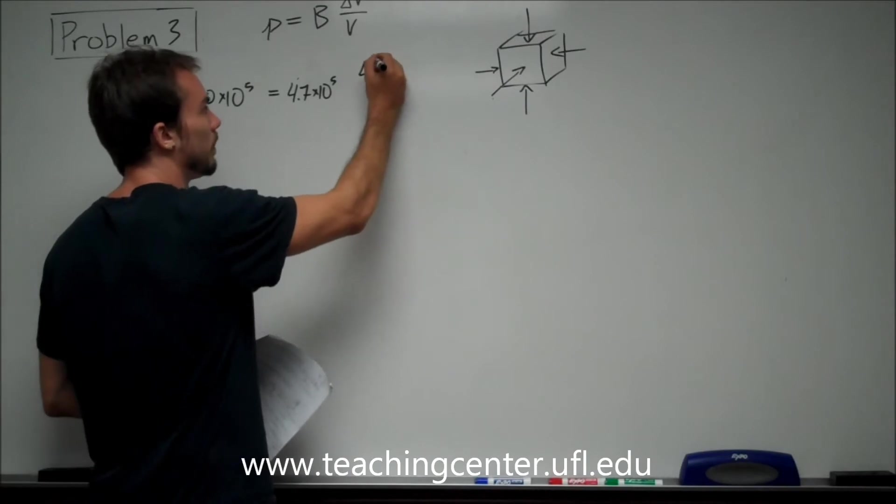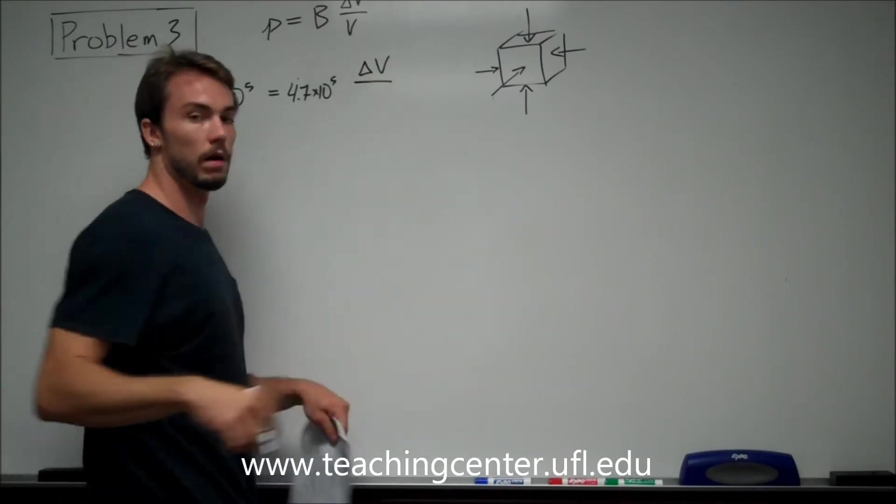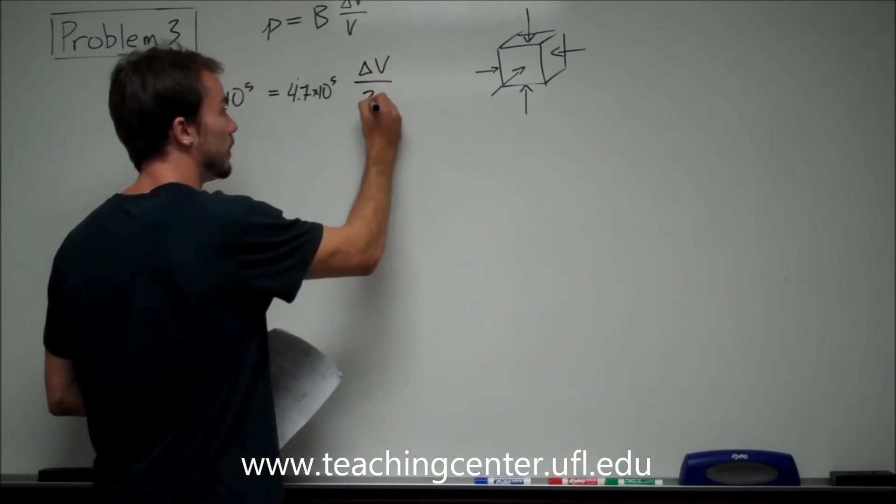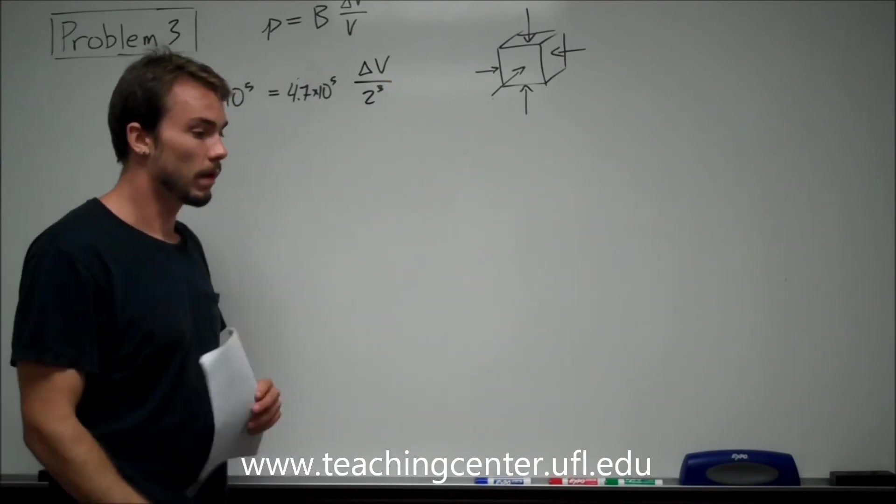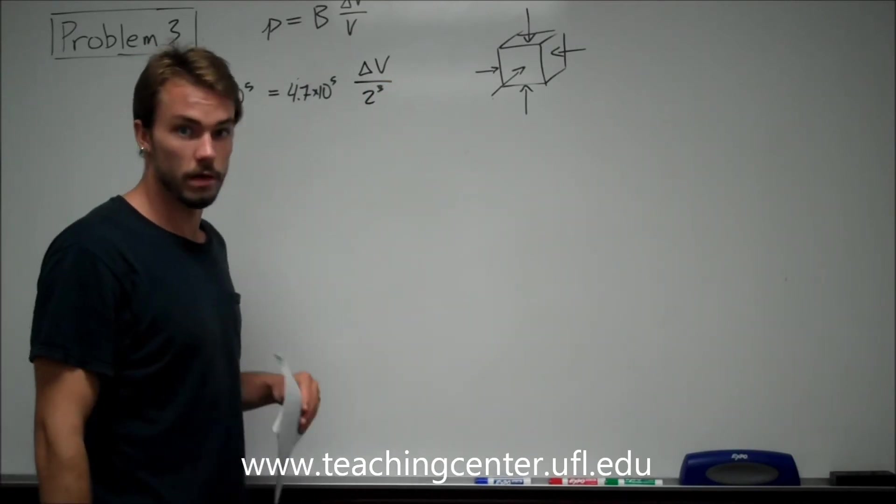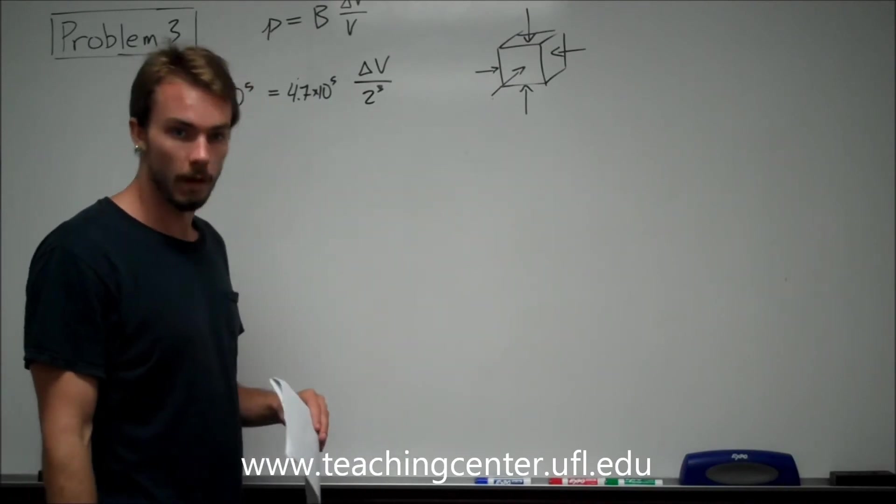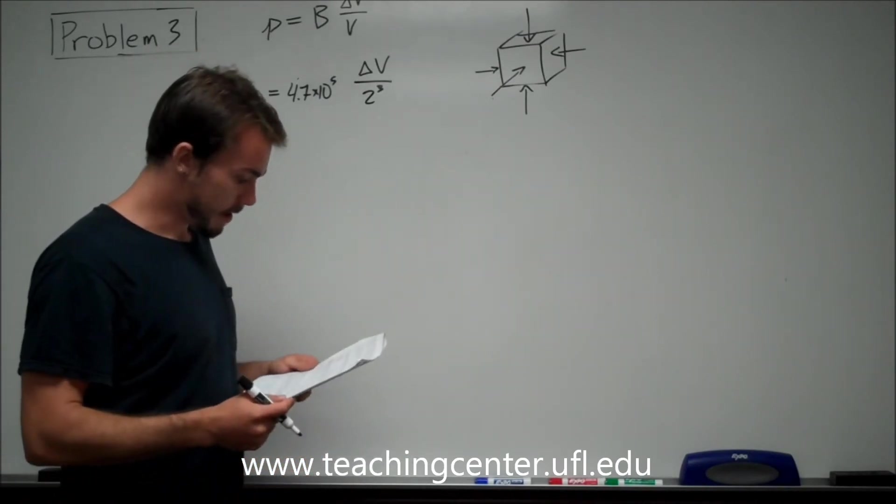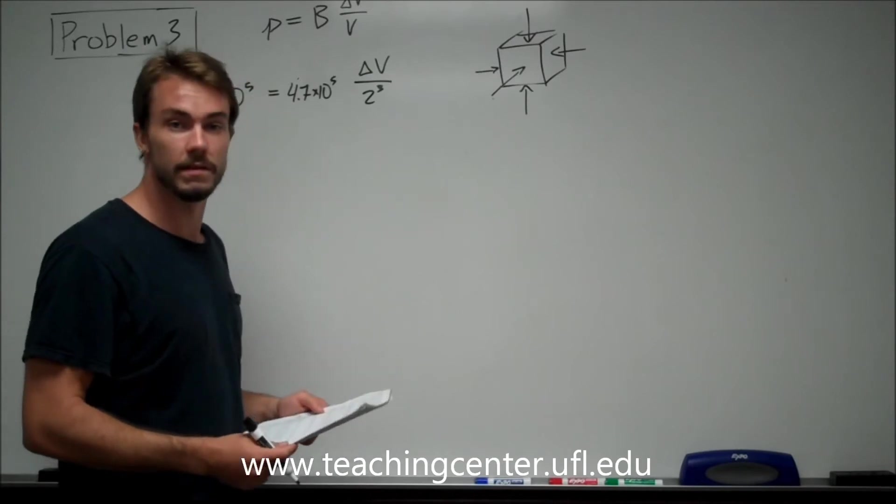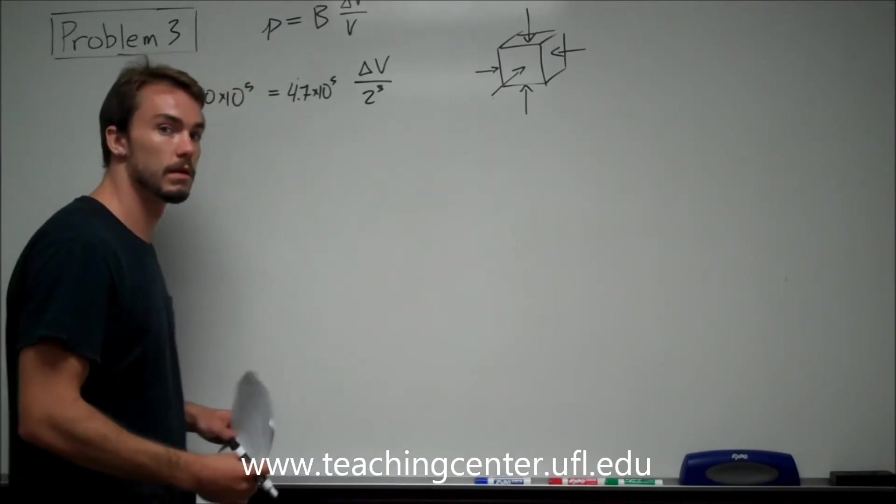So delta V over original volume 2 cubed. If you don't feel confident doing this, or if you don't trust me, that's fine. Do it with 0.02. It will give you the same answer. I'm just skipping the step of the conversion. In this particular equation, it's safe to do.